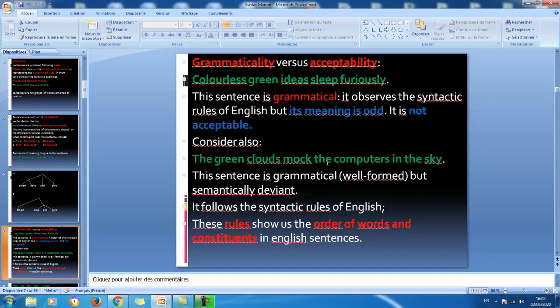Same thing here. 'The green clouds mock the computers in the sky.' Same thing here. Once again, can clouds be green? Can they do this action of mocking? And, they mock what? The computers? Where do we find the computers? In the sky? So, it's a far-fetched idea here. It's not something that corresponds to what we know about the world here. So, it's semantically deviant. But, it is grammatical. It's well formed here. So, it follows, this sentence, it follows the syntactic rules of English. These rules show us the order of words and constituents in English sentences. This is the main thing that we are going to show through concrete examples of syntactic rules. And, this is going to be shown in the second part of this course.